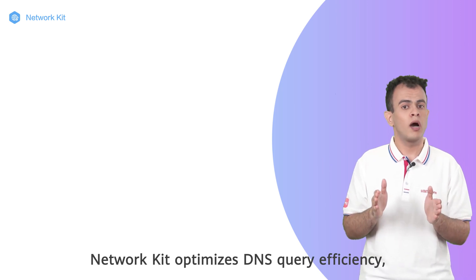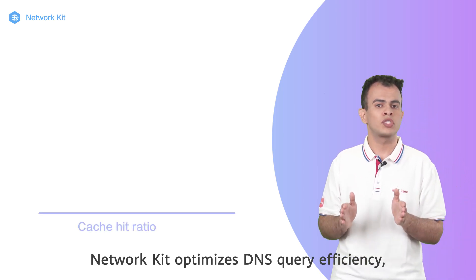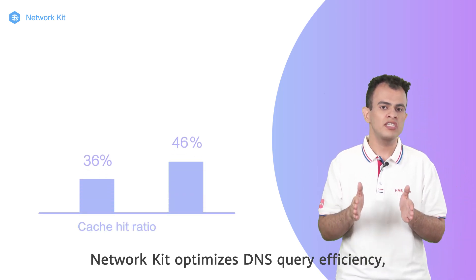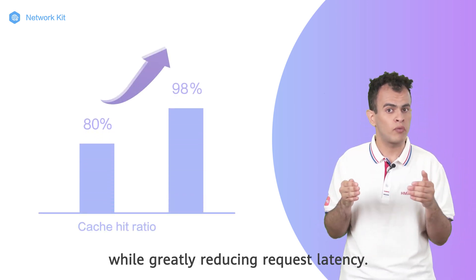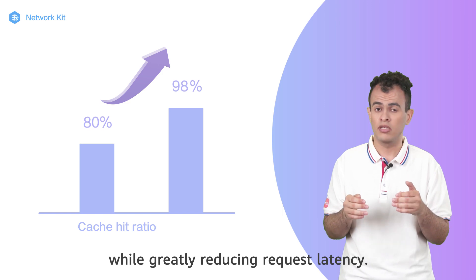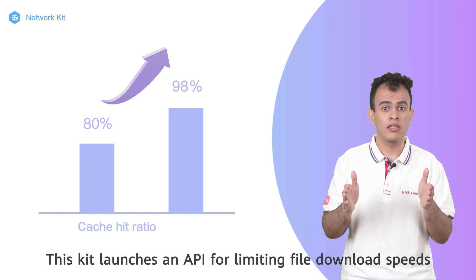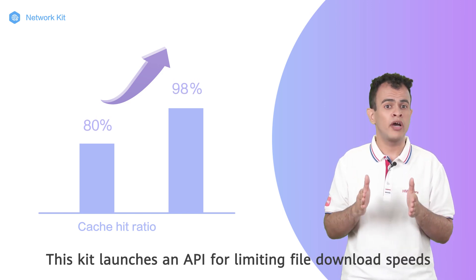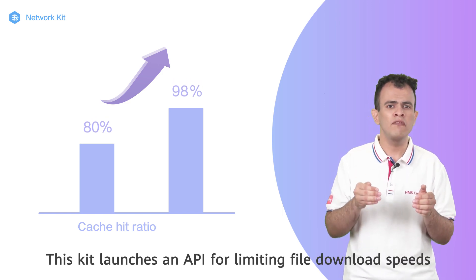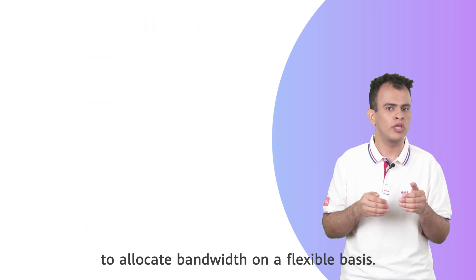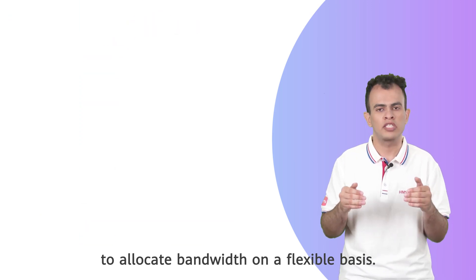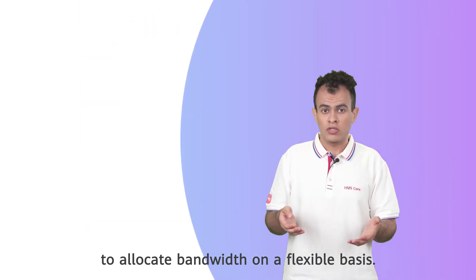In this version, Network Kit optimizes DNS query efficiency while greatly reducing request latency. This kit also launches an API for limiting file download speeds to allocate bandwidth on a flexible basis.